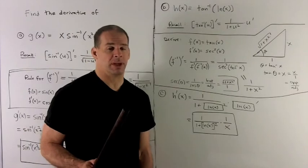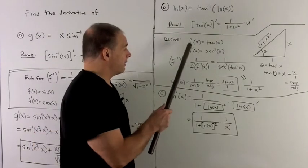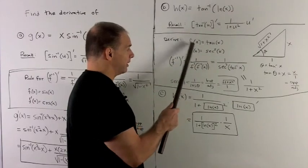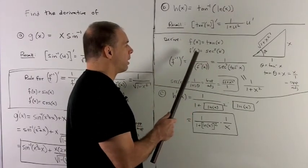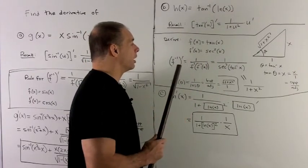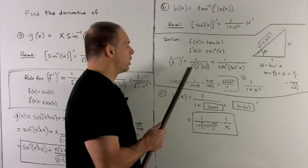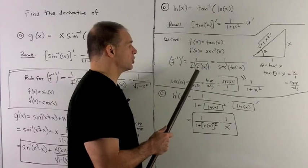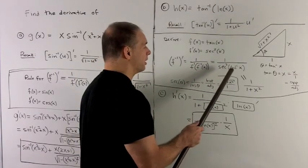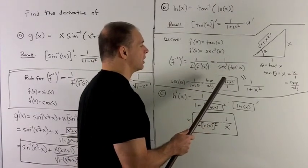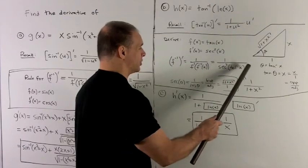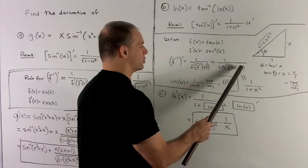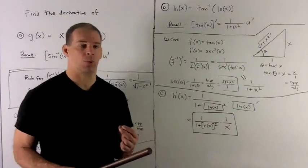Let's do the derivation just to make sure we can do it. We have f of x equals tan x, so that's what we're taking the inverse function of. f prime is going to be secant squared, so the derivative of the inverse function is 1 over the original derivative evaluated at the inverse function. We want to figure out what secant squared of tan inverse of x is — the square is on the outside, so we're really trying to get secant of tan inverse of x, and once we have that, we square it.